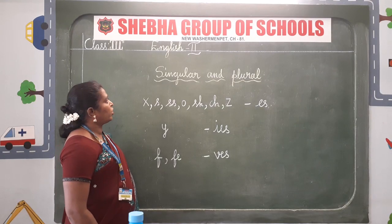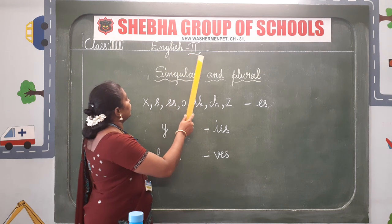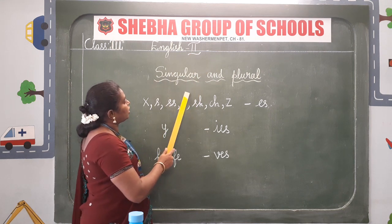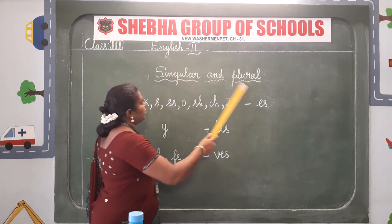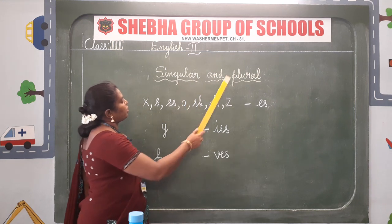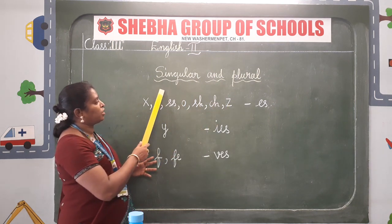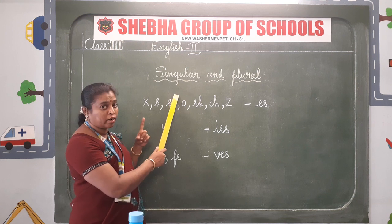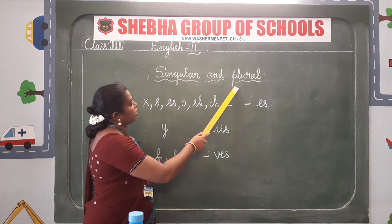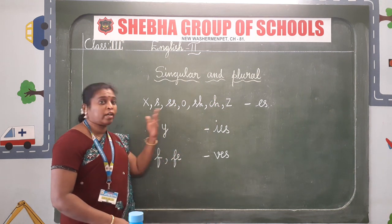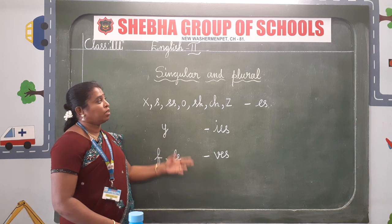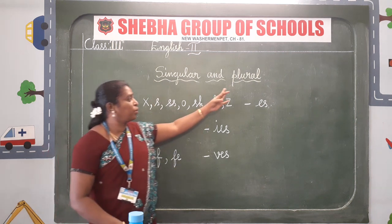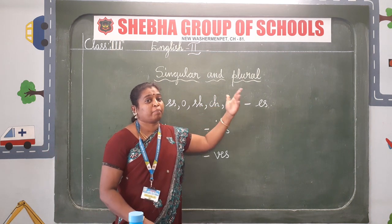Now we are going to learn grammar: singular and plural. Singular means it refers to one noun. Plural means it refers to more than one noun.